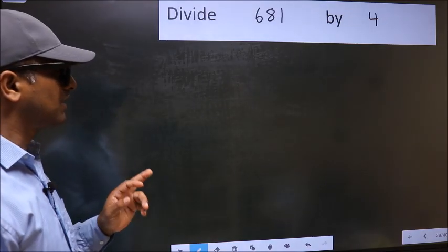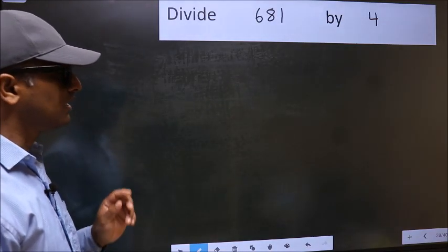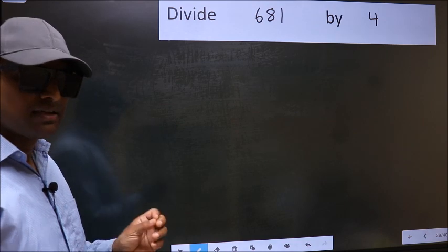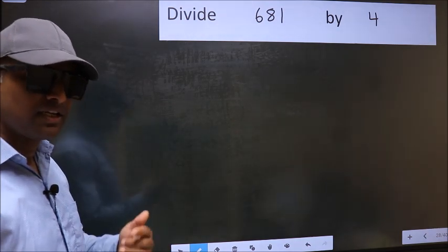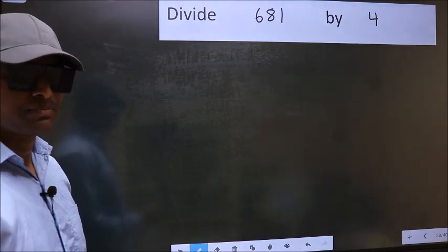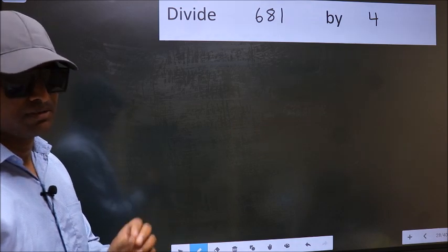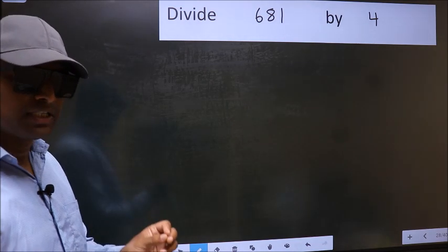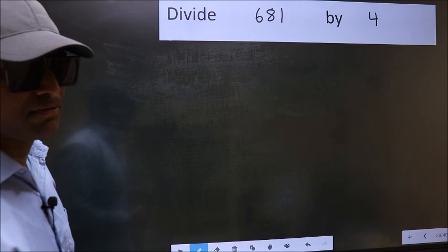Divide 681 by 4. While doing this division, many do this mistake. What is the mistake that they do? I will let you know. But before that, we should frame it in this way.